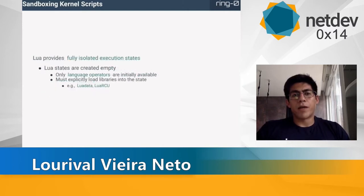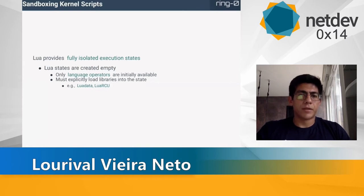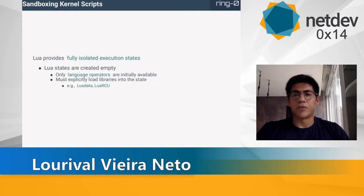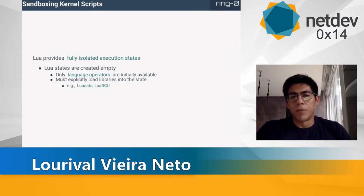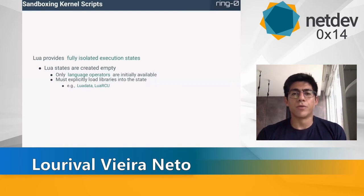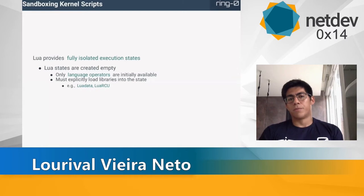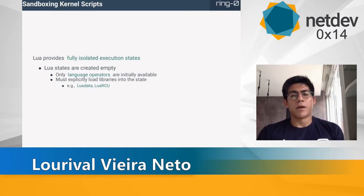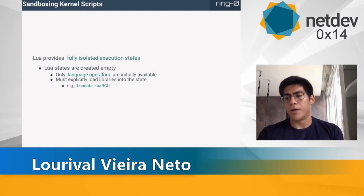Lua also provides fully isolated execution states. We have separate execution states for every purpose. For instance, XDP Lua has one state per CPU, and all those states are created completely empty. The kernel developers can choose what libraries to load into such states. We have two examples of libraries. One is Lua data, which is used to access memory external to the Lua VM safely. We use this in both NF Lua and XDP Lua for accessing packets inside the scripts.